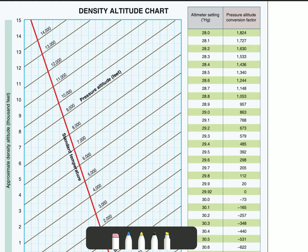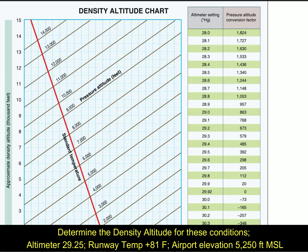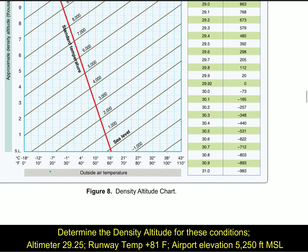Determine the density altitude for these conditions: altimeter setting of 2925, runway temperature of 81 degrees, and airport elevation of 5250.